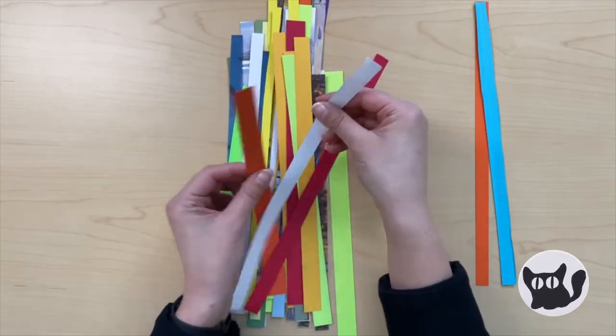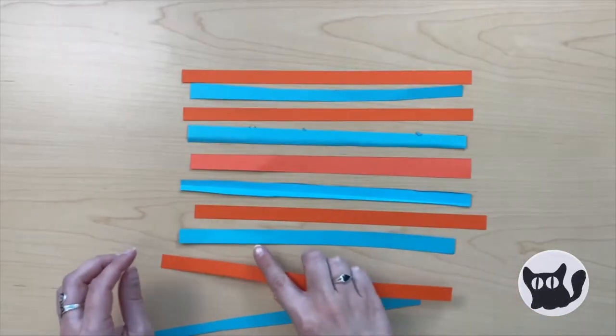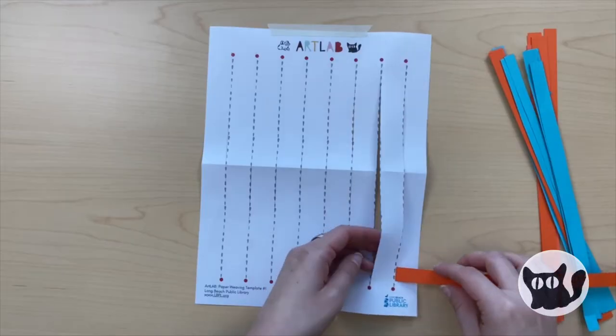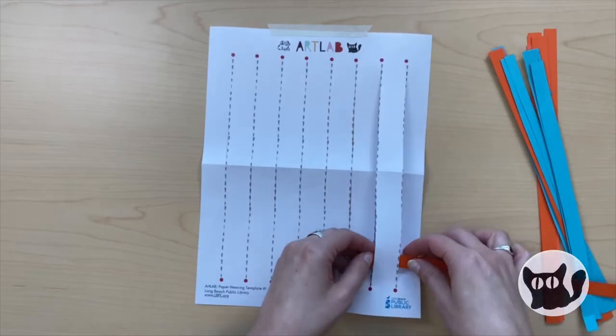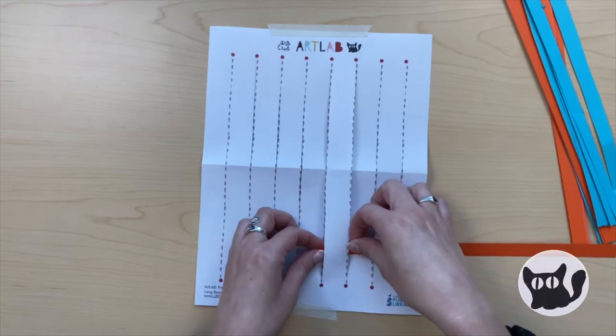Now take a look at your paper strips. Decide how you want to create your pattern. Begin weaving your first strip under, then over, under, then over.